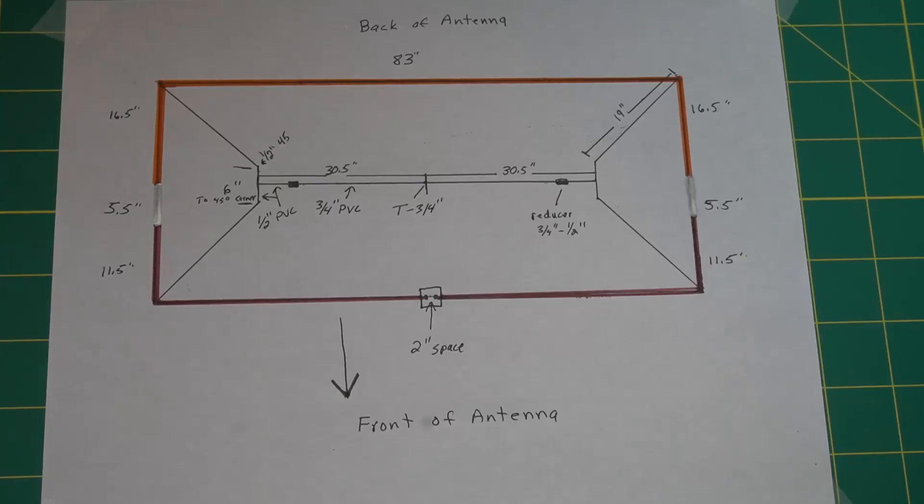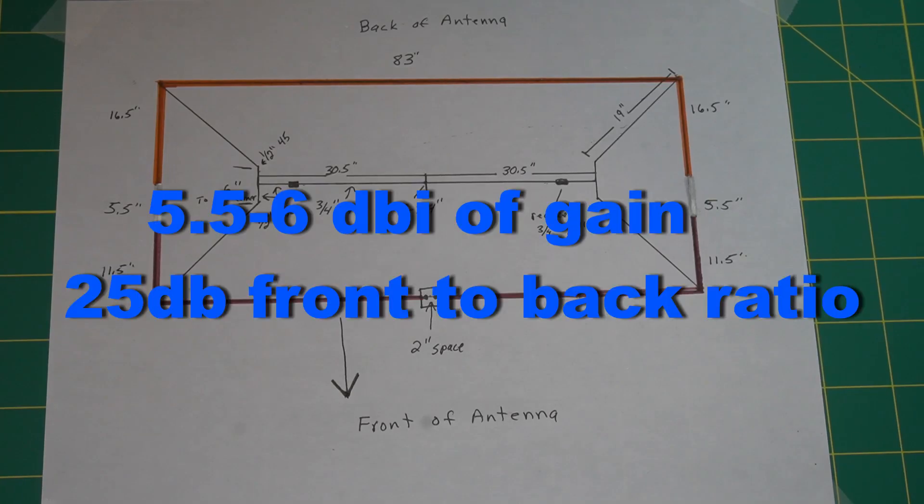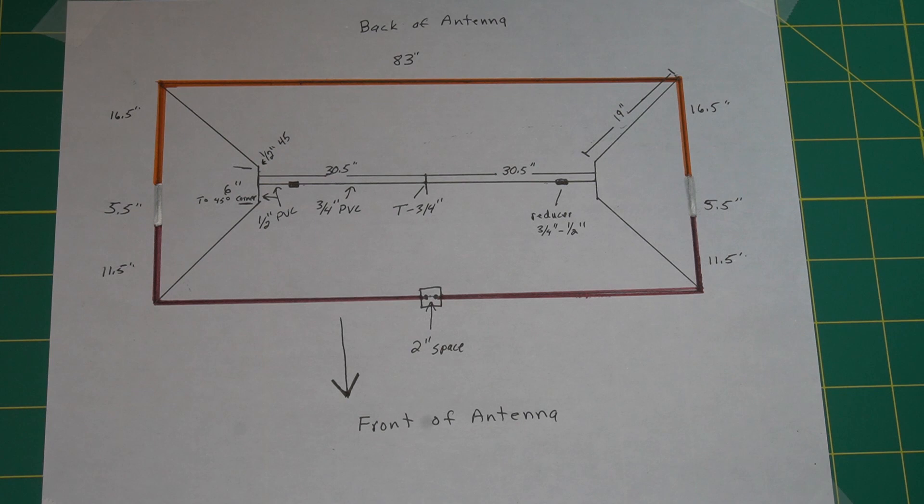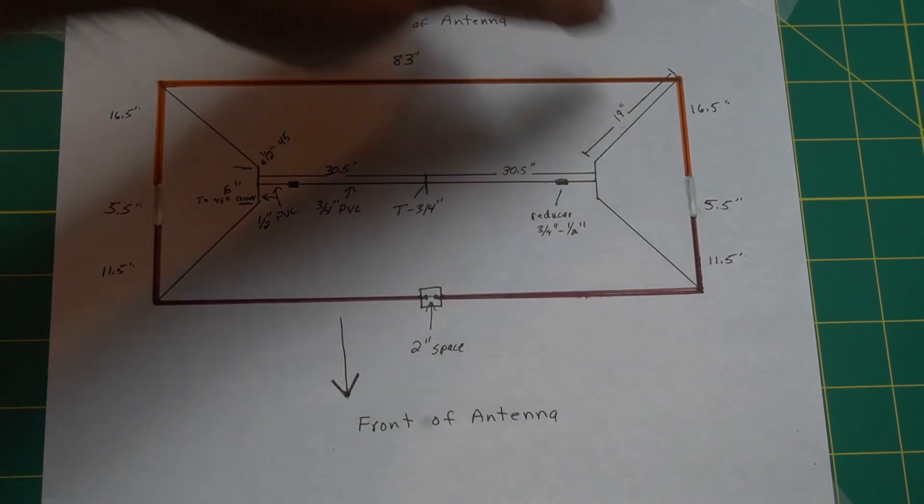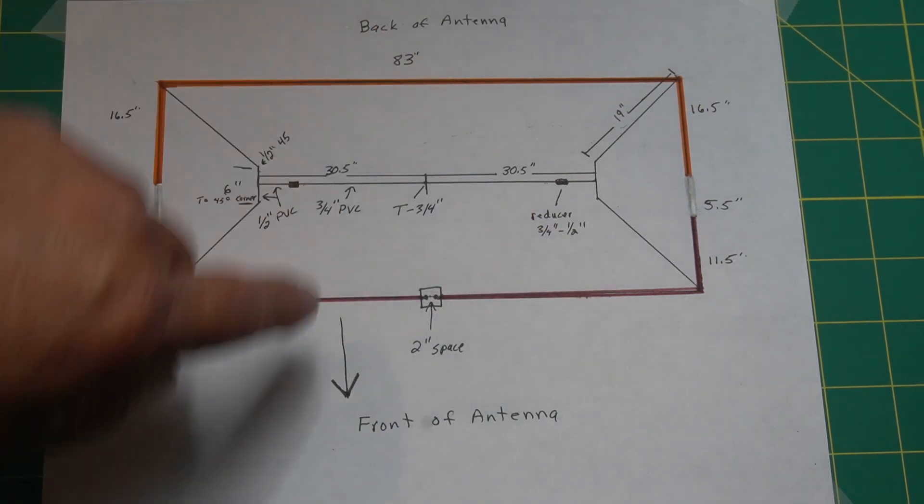This is two elements. I think it's like 6 dBi, something like that, pretty good front to back. There are Moxon calculators online you can go to and you put in your frequency, so you can make these for any band really. 20 is probably a pretty good one also because it keeps it fairly small. That's with the bending in and the sides of the dipole.